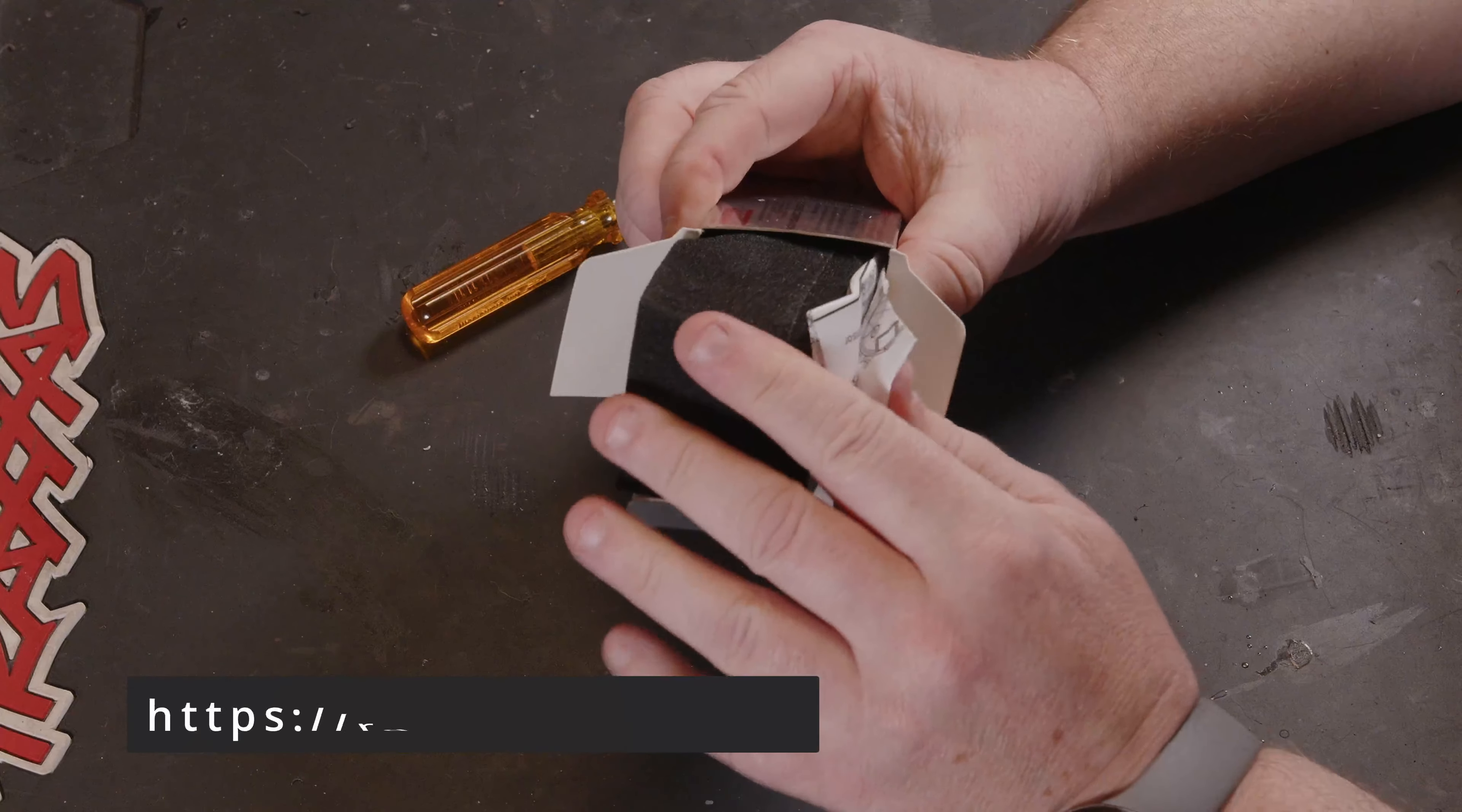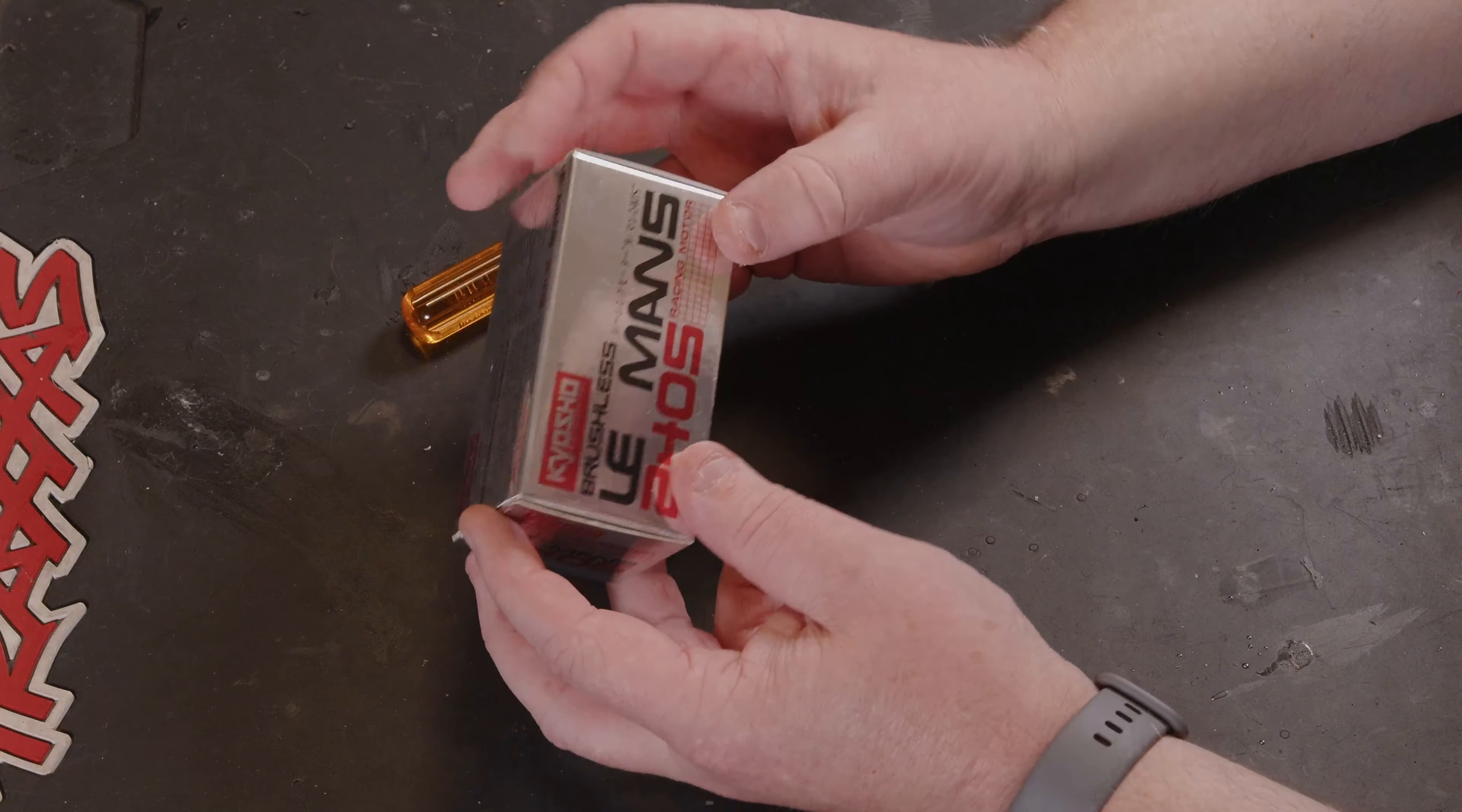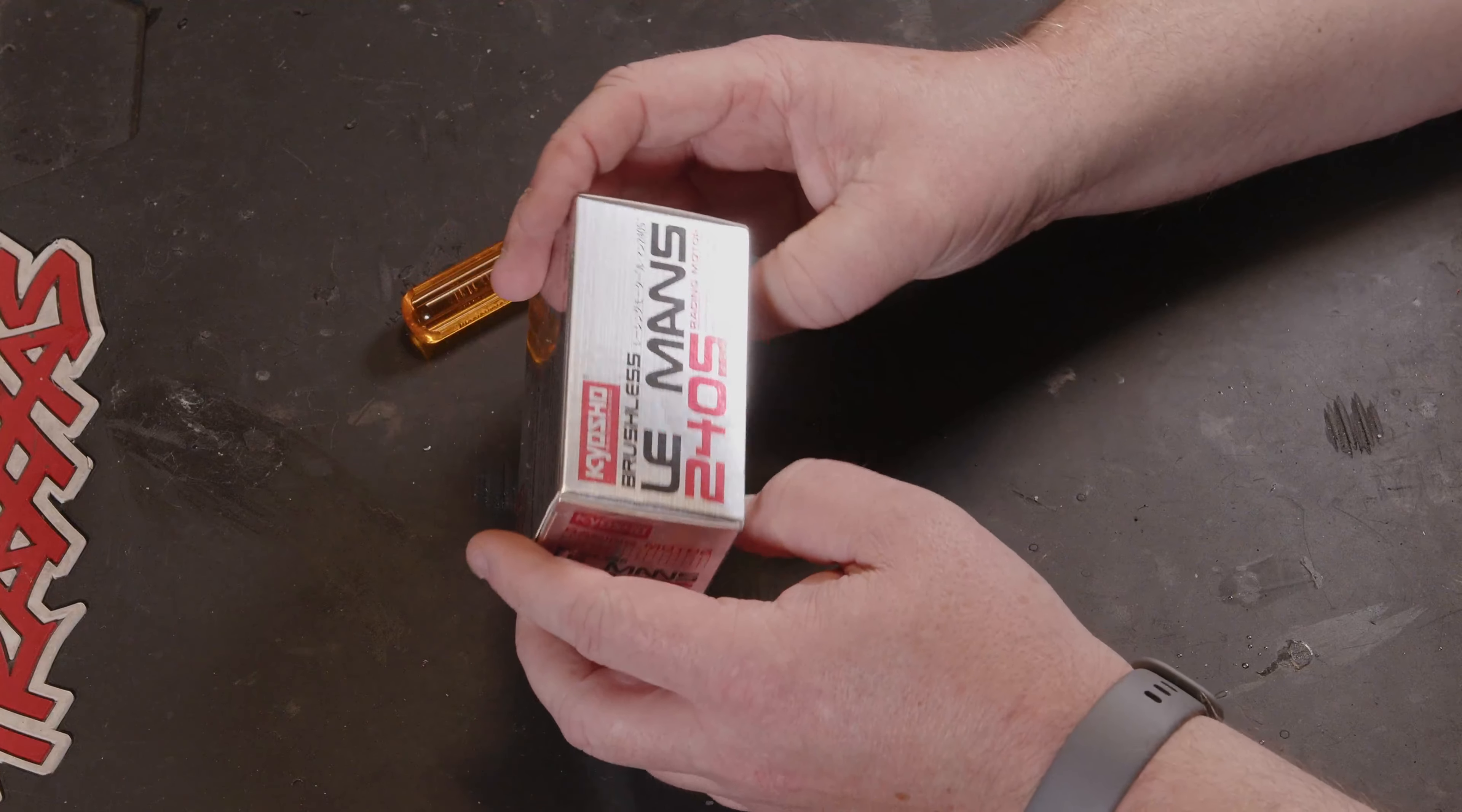But this one is available from Dave and the crew at RD Models at Chesterfield. I'll put a link in the description below. As I said, they're not a cheap motor. They're a really nicely built motor, they're serviceable which is nice to see, and they do look really nice. They are really well made. And again, this one is the 15.5 turn for your four-wheel drive classic series, legendary or vintage series, whatever you want to call it. It's just a nice brushless motor.